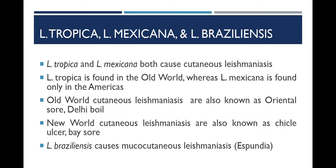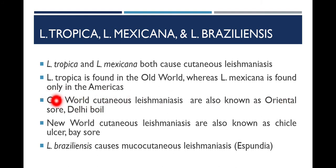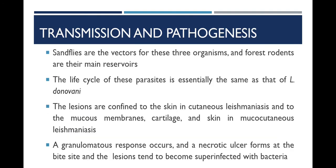These common names were given to the lesions of cutaneous leishmaniasis by different groups of people in different parts of the world. Leishmania brazilensis causes another type called mucocutaneous leishmaniasis, also known as espundia. Sand flies are the vector for all three organisms, and forest rodents are the main reservoirs of these three species of Leishmania. The life cycle of this parasite is essentially the same as that of Leishmania donovani.